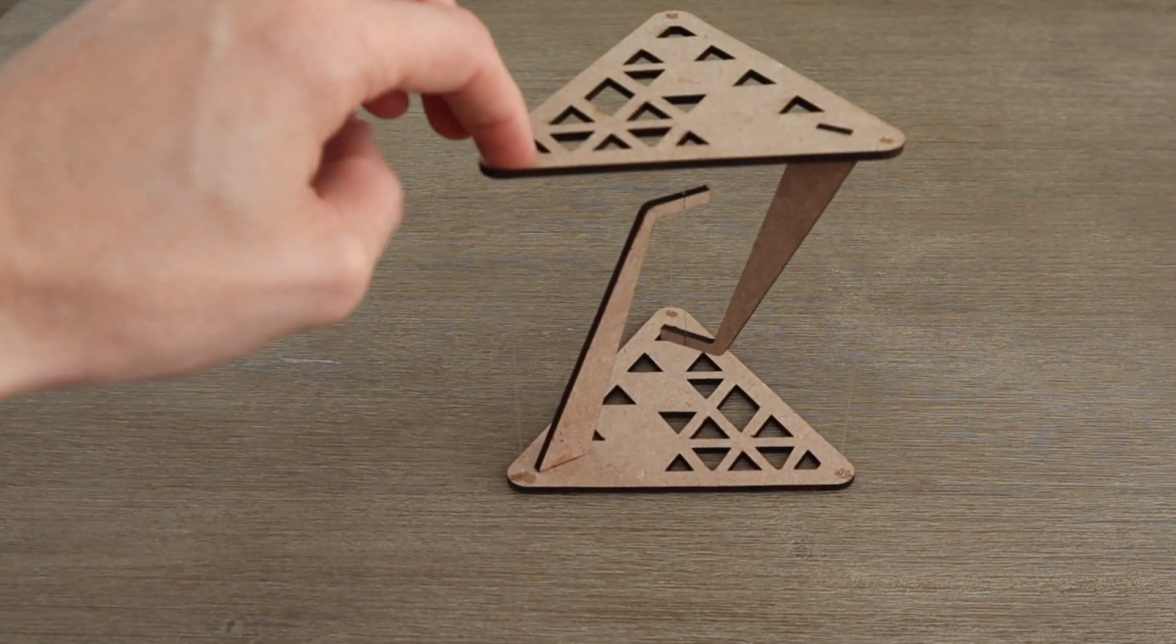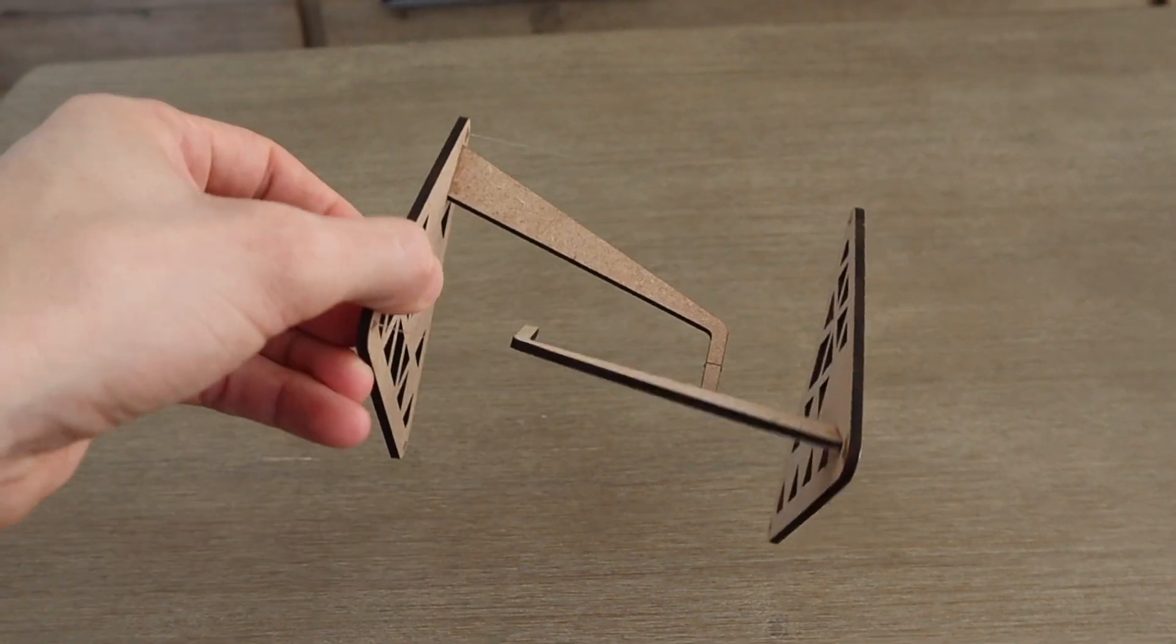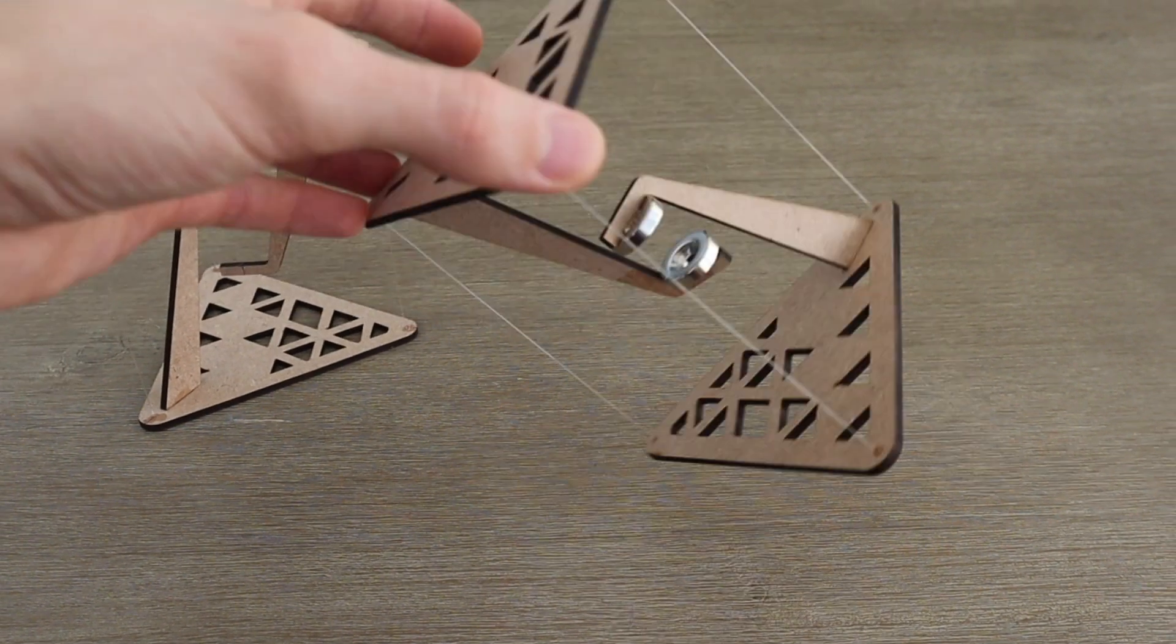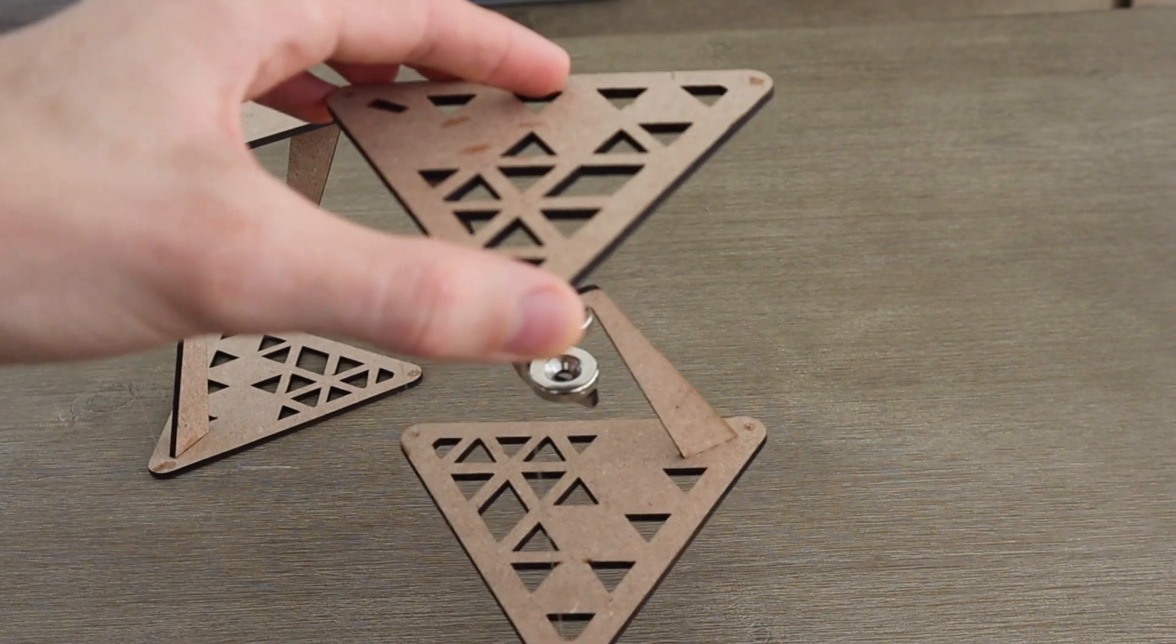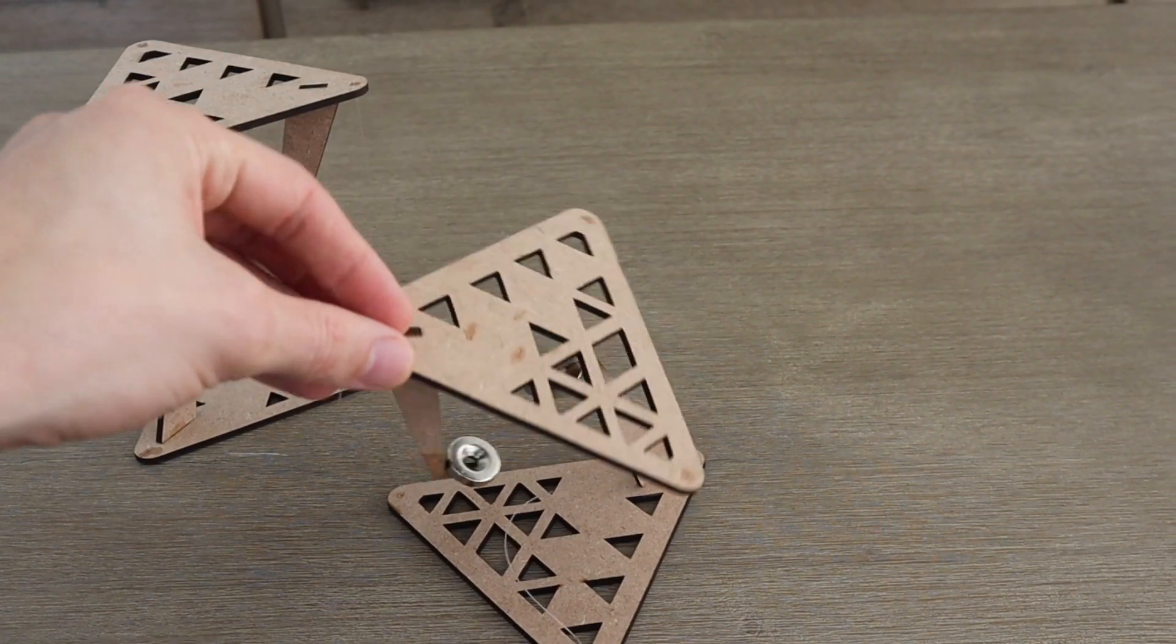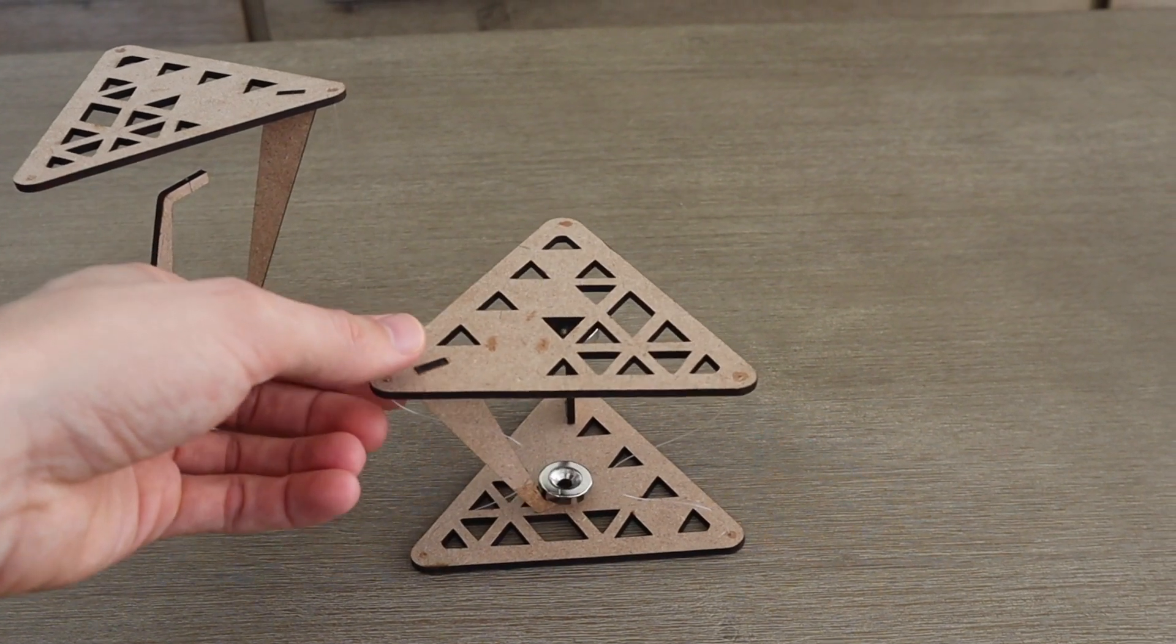The tables are surprisingly rigid, you can even pick them up and hold them sideways. The magnetic one will also hold itself up sideways, but it collapses if you put too much weight on it. You can just pull the magnets back up towards each other to reset the table.